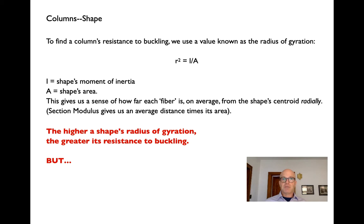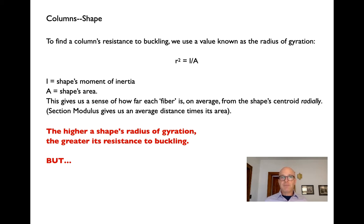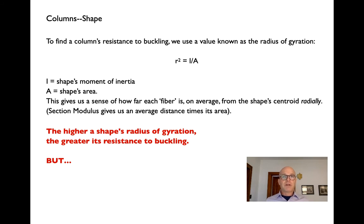Even though beams have section moduli in both their x and y axes, we never used the section modulus for the weak axis — it was usually much, much lower. With columns, we have a slightly different issue because we know they're being loaded axially, but we don't really know which way they're going to buckle. So we have to come up with a way to make the column strong in every direction. We're more interested in designing columns to a given slenderness ratio — taking the average width divided by the length and using that along with empirical knowledge to figure out a safe load.